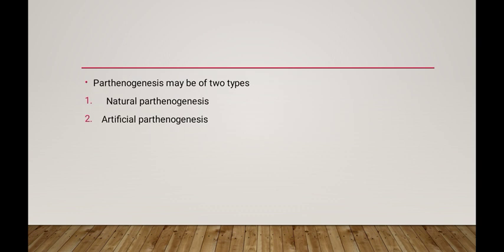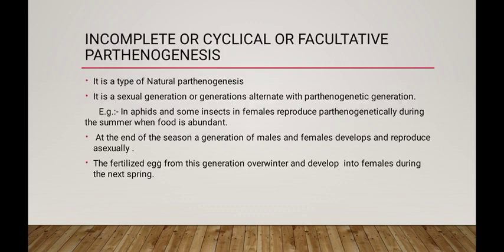Pathogenesis is of two types: natural and artificial pathogenesis. Here we can see an example of natural pathogenesis which is called incomplete cyclical or facultative. It is a type where sexual generations alternate with pathogenetic generations.